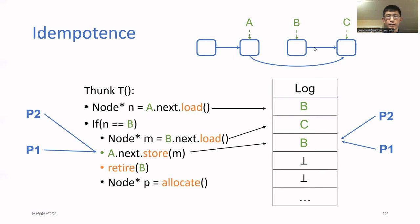Now P2 overtakes P1 and starts executing the retire. Retire is basically used for memory management. It delays freeing a node until no other process can be accessing it.